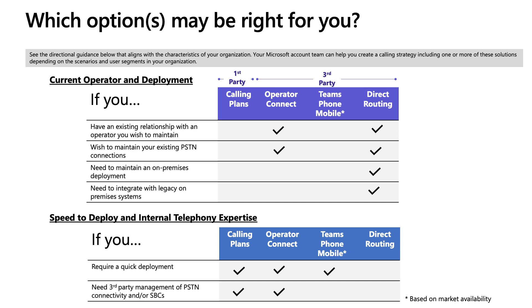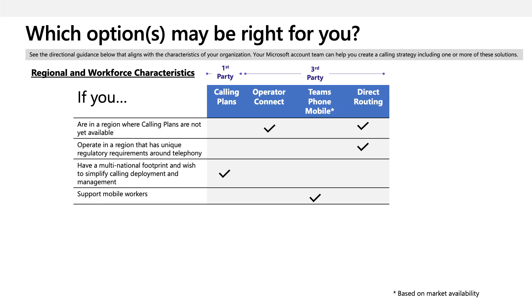Sales and frontline workers especially would find Teams Phone Mobile extremely valuable. In terms of regional workforce characteristics, Calling Plans today are available in 35 markets. If you need to expand geographical coverage beyond that, you can use a combination of Calling Plans, Operator Connect, Direct Routing, or Teams Phone Mobile to cover your multinational footprint. Also, if you're in a region with unique regulatory requirements around telephony, Direct Routing can be a really good option depending on the regulations of that region.